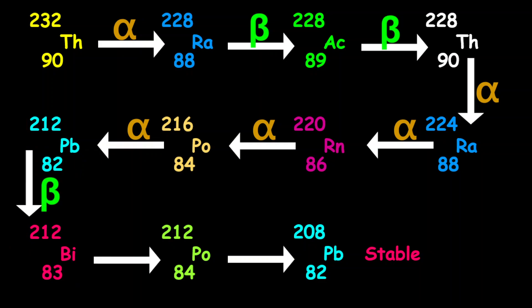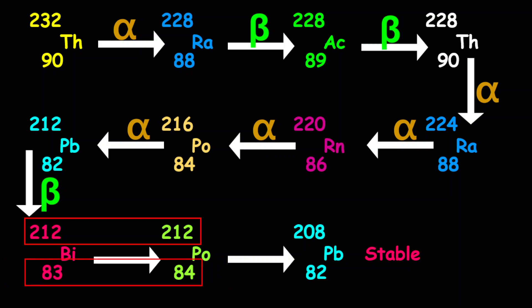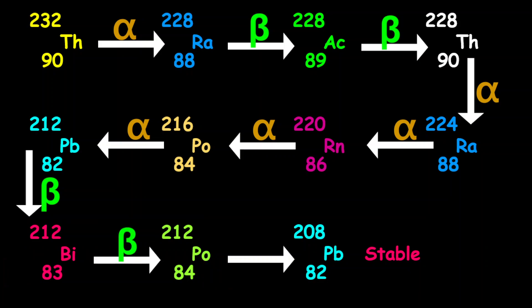Coming from bismuth into polonium-212, the mass number remains the same and the proton number increased by 1, therefore this is another beta decay.